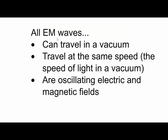Some features of electromagnetic waves that differentiate them from other types of waves. Firstly, they can all travel in a vacuum. Secondly, they all travel at the same speed. And in a vacuum, that would be the speed of light, 300 million metres per second.